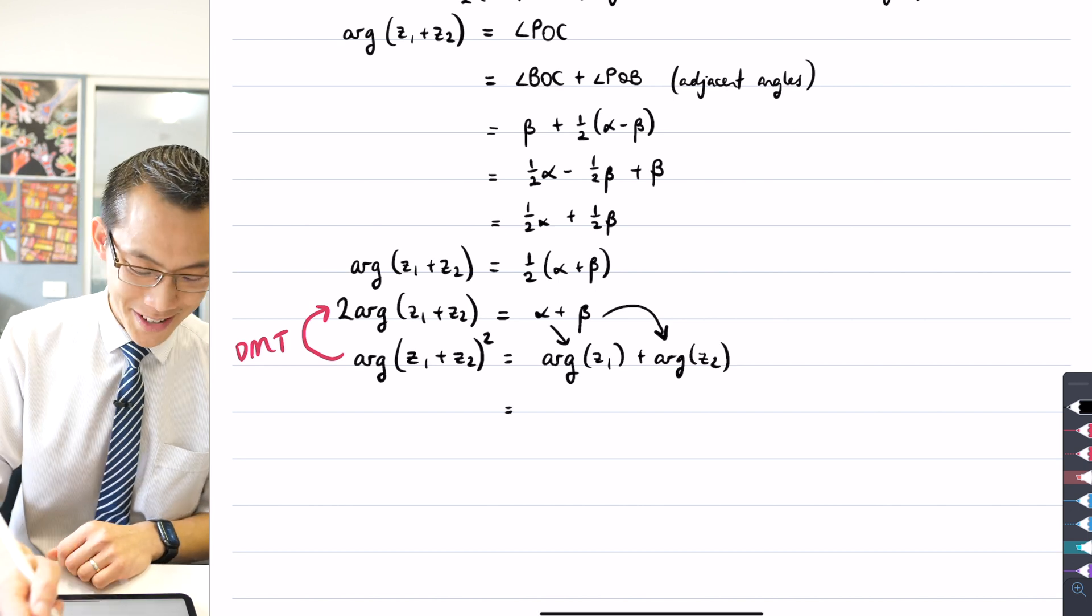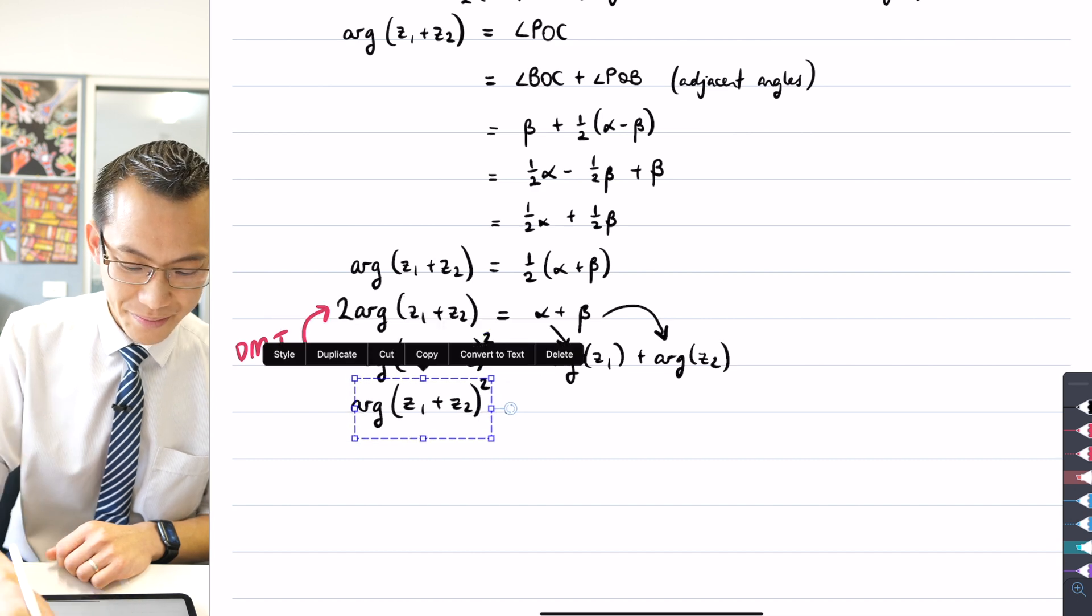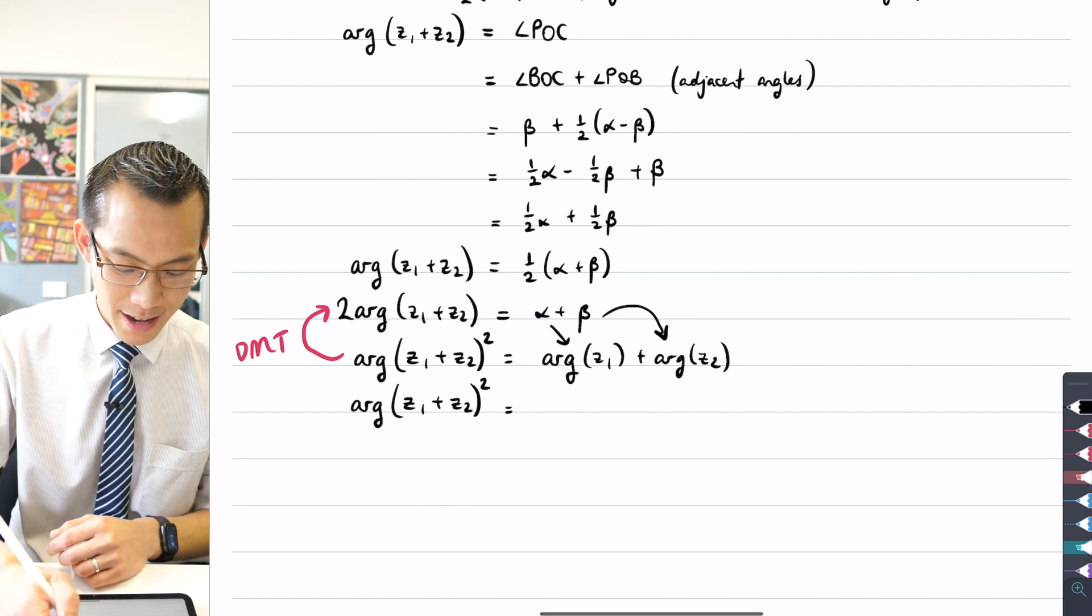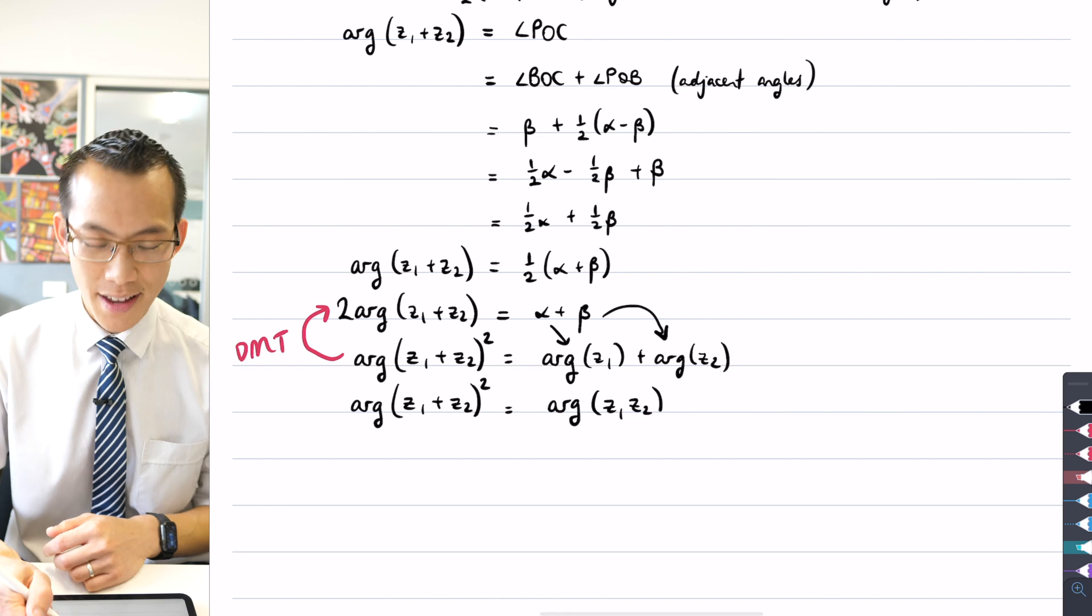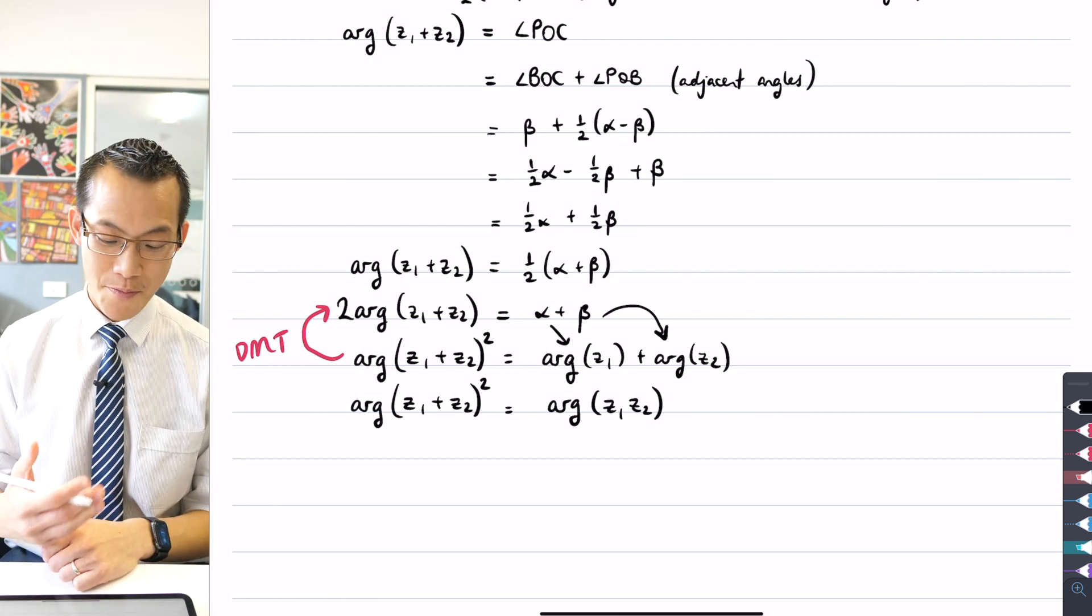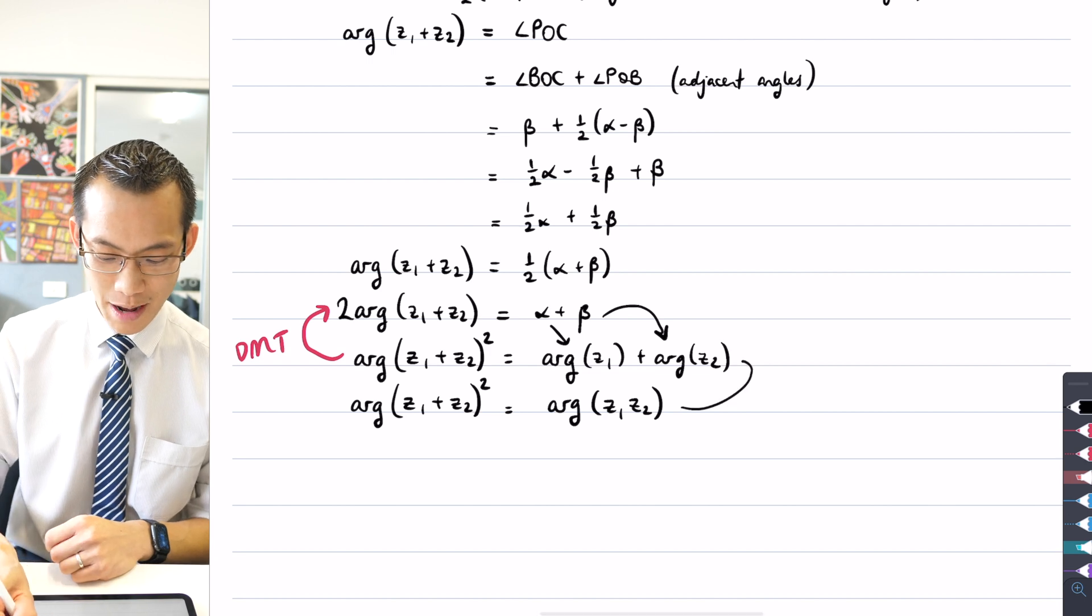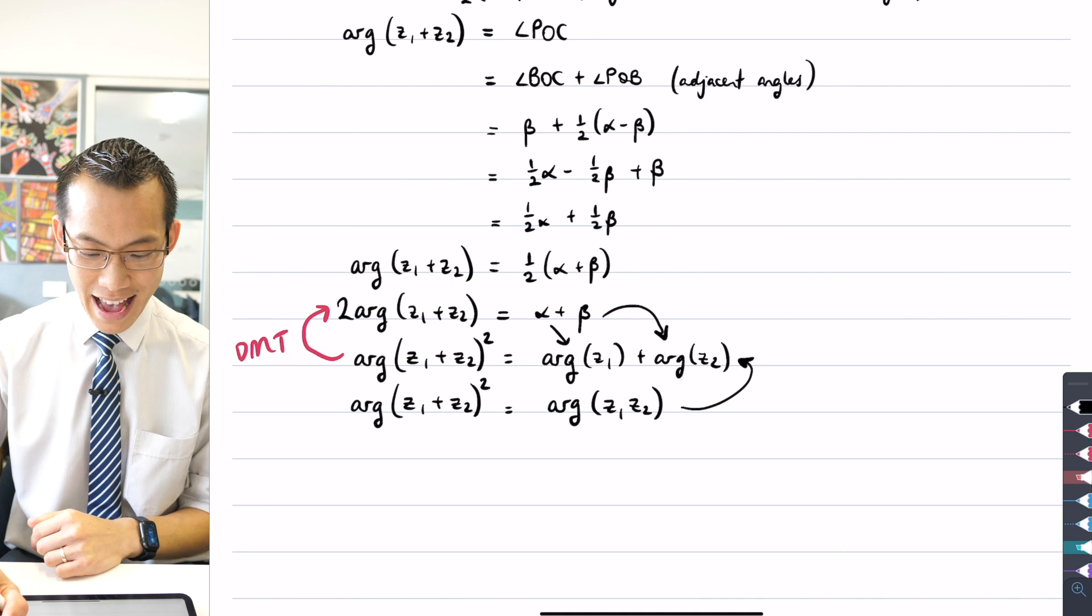Which is, we're almost there. What happens when you're adding arguments? And the answer is, it's what happens when you multiply two complex numbers together. You multiply the moduli and you add the arguments, which is what I'm doing going from that line to that line. So this is the result as required.